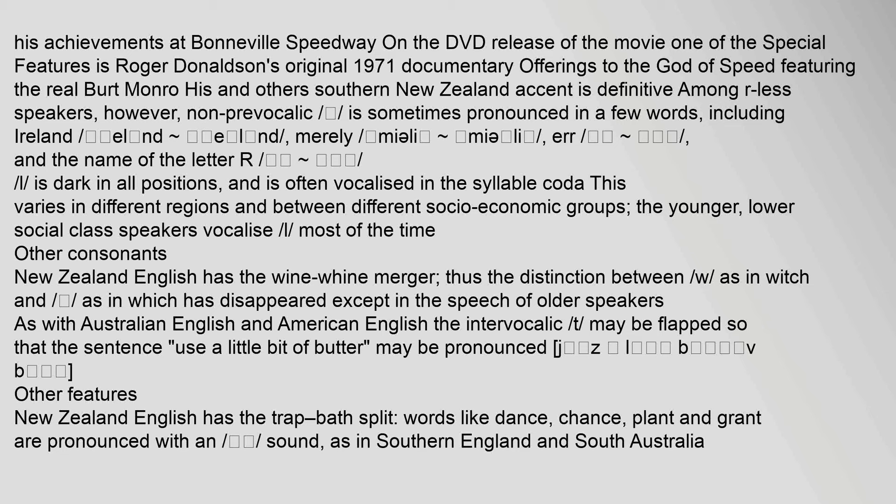As with Australian and American English, the intervocalic 't' may be flapped so that the sentence 'use a little bit of butter' is pronounced with a flapped t sound. New Zealand English has the trap-bath split: words like 'dance', 'chance', 'plant' and 'grant' are pronounced with an 'ah' sound, as in Southern England and South Australia. However, for many decades prior to World War II there existed an almost 50-50 split between the pronunciation of 'dance' as 'dans' or 'dahns', 'plant' as 'plant' or 'plahnt', etc.